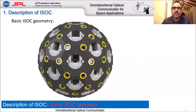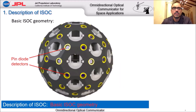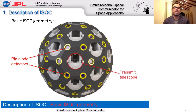This is another picture of the ISAC. You can see the pin diode detectors — we have an array of detectors so we can detect signals from any direction, and transmit telescopes that we can use to close the link.